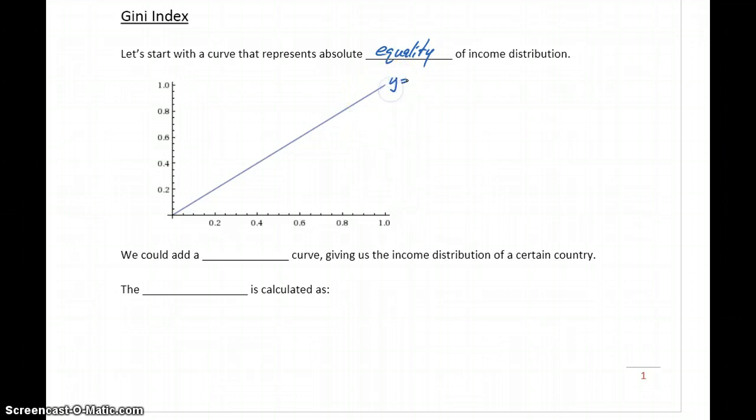And this would be this blue line, y equals x. If we constructed a table of values for this line, where our x-axis represents the percent of families and our y-axis represents the percent of income, when x is 0.2, y would be 0.2. So 20% of families have 20% of the income. If we looked at 80%, the y value would be 80%. So 80% of families have 80% of the income. And if we jumped all the way up to 100% or 1, 100% of the families have 100% of the income. So we have this perfect equality in terms of income distribution.